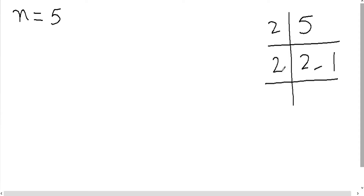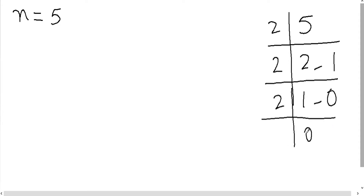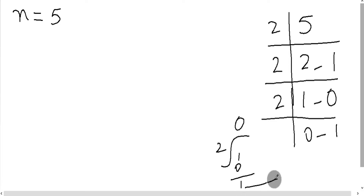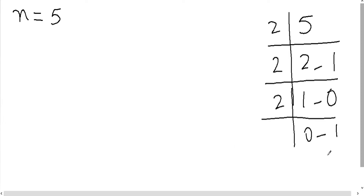Jaise for example, jab divide kar rahi hoon, jab number 1 ho jata hai to aage nahi jata — zero aur peeche remainder one. Agar aap aise bhi divide kar ke dekh lein to two zero times is zero aur neechay aayega one. Yahi remainder hum ne last mein likha.